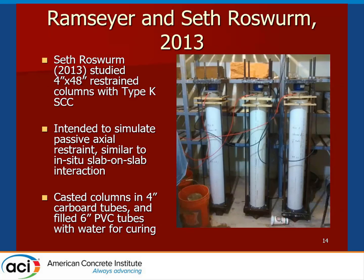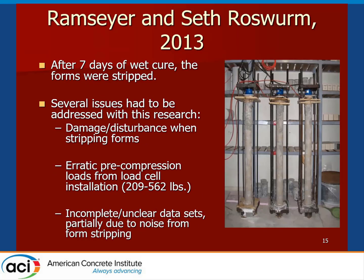In 2013, Dr. Chris Ramsey and Seth Roseworm studied restrained columns under a passive restraint system. These were four-inch diameter by four-foot long columns cast with Type K shrinkage comp, intended to be restrained only by the expansion of the concrete itself, just like a concrete slab restrained by mature slabs on its periphery. Cardboard tubes were used to cast the concrete, and PVC jackets maintained a wet cure. However, stripping the forms caused trauma due to cardboard sticking to the concrete, installation of the load cell introduced erratic pre-compression loads, and some data sets were noisy or incomplete.